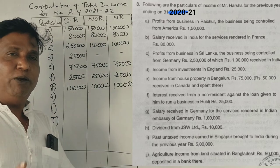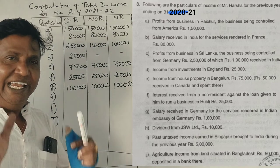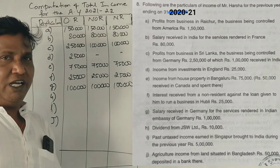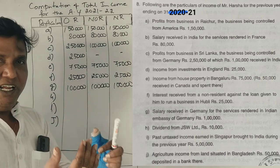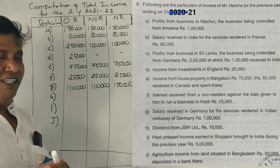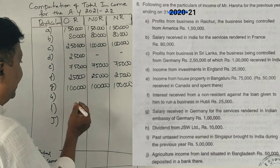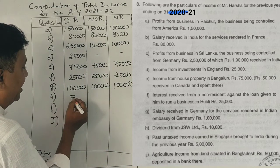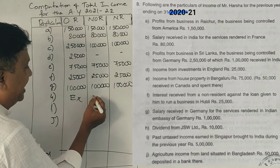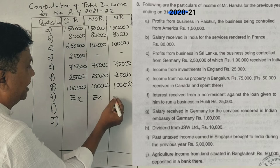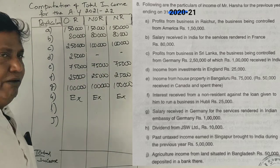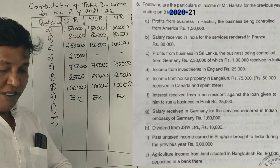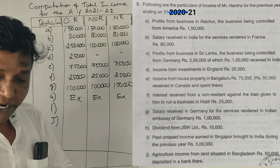JSW Ltd. is an Indian company. If an Indian company pays dividends — 50 rupees — what does it mean? It is exempted. Exempted money.